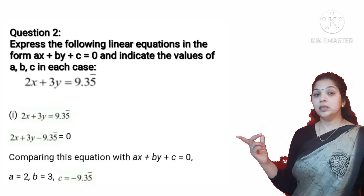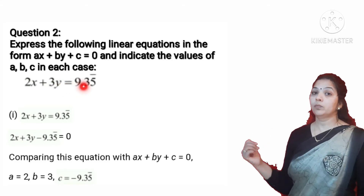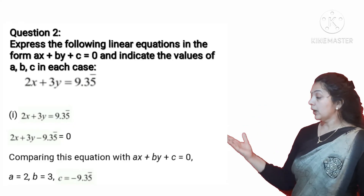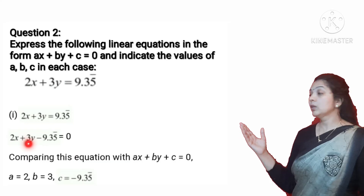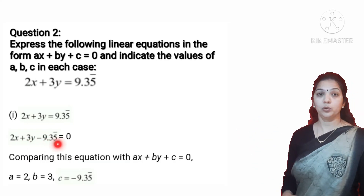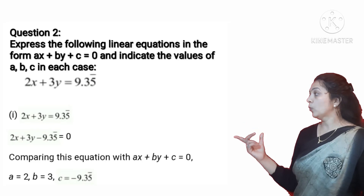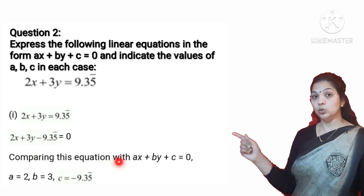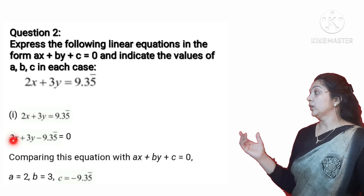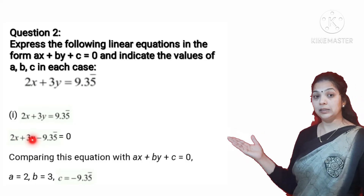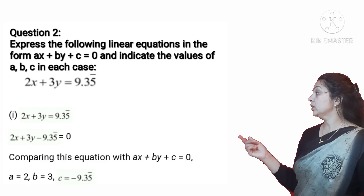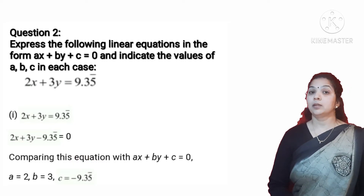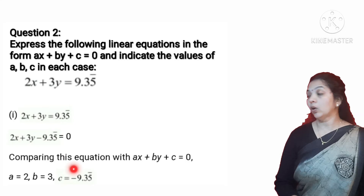The equation given is 2X + 3Y = 9.35. Taking 9.35 to the left hand side, it becomes 2X + 3Y minus 9.35 = 0. Comparing with the general form, the coefficient of X is 2, so A = 2; coefficient of Y is 3, so B = 3; and the constant term is minus 9.35, so C = minus 9.35.